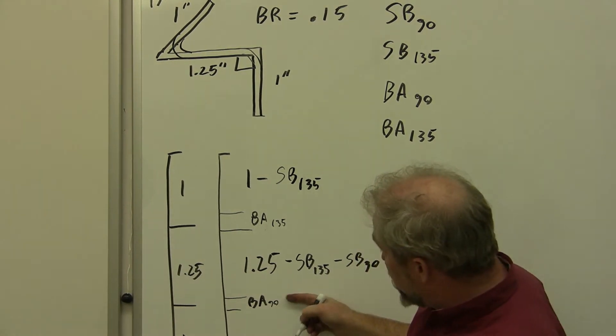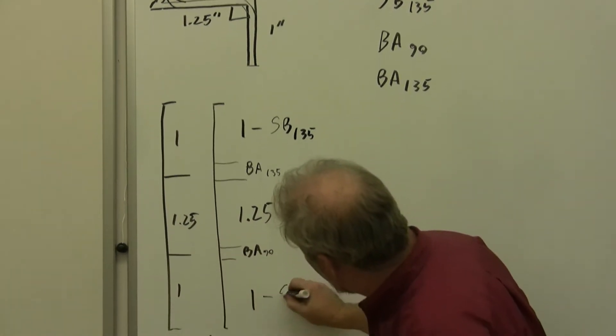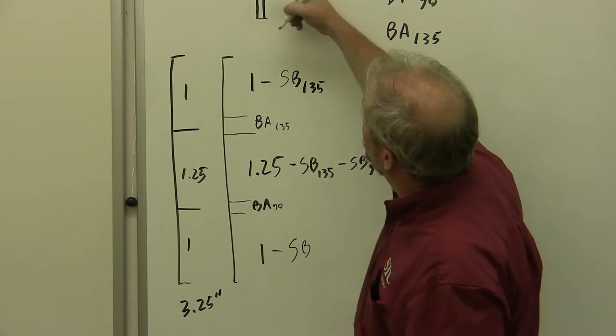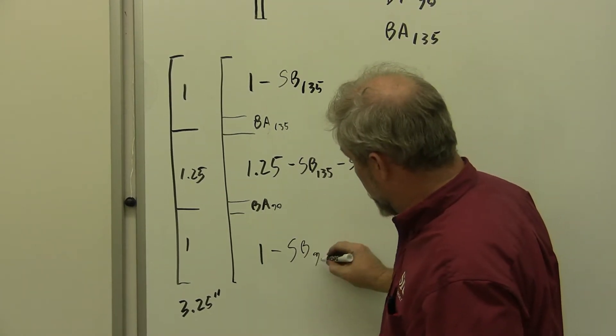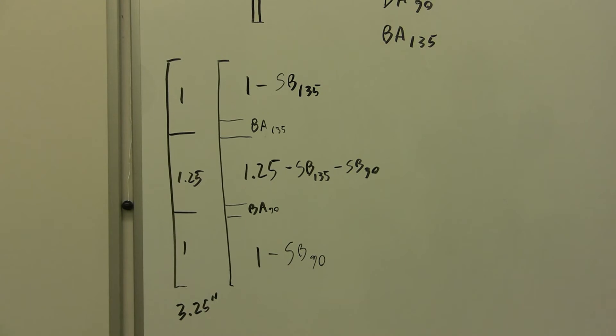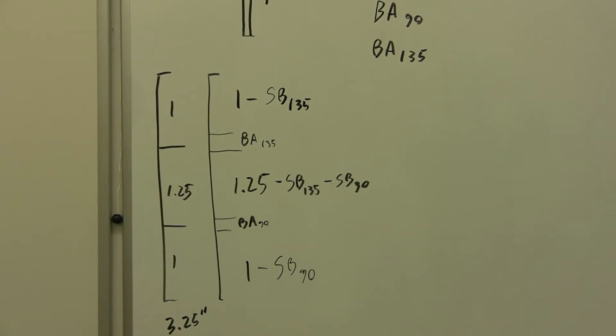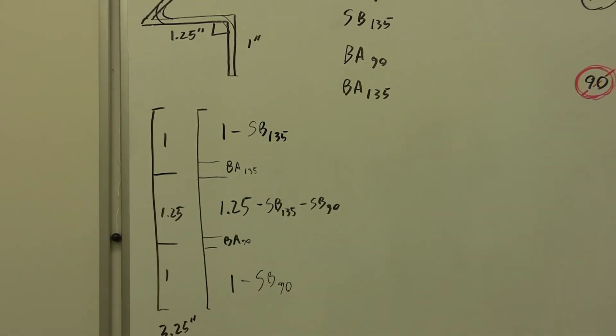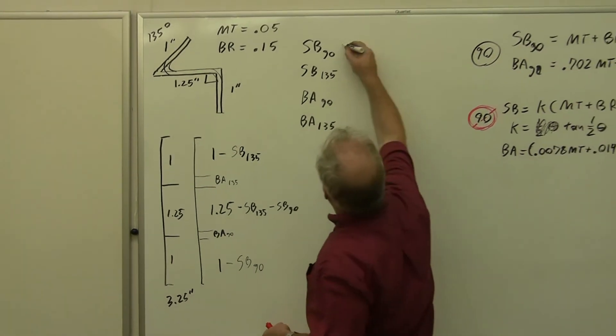This one's just bend allowance 90, this is 1 minus the setback 90. And now we can see how we're going to lay all of these pieces out. We just need to calculate each of these numbers.